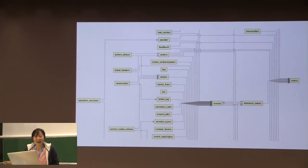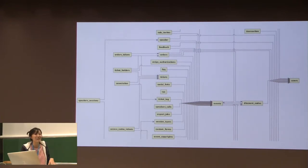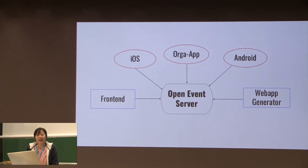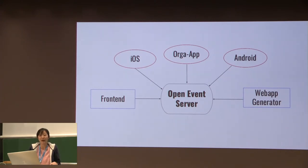This is the data infrastructure of the system. Unfortunately the bottom got cut off — it's not a complete picture, but you can find more information on our GitHub. These are the main repositories of Open Event: there is a core Open Event server and their front-end component, iOS, Android, OGA app, web app generator, and many more.